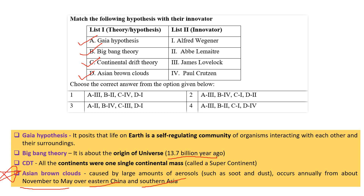Now matching each hypothesis with its discoverer: the Gaia hypothesis was discovered by James Lovelock. The Big Bang theory was discovered by Abbé Lemaître. The continental drift theory was discovered by Alfred Wegener. And the Asian brown cloud was discovered by Paul Crutzen. So the right answer has A matched to third, B to second, C to first — making option four the correct answer.